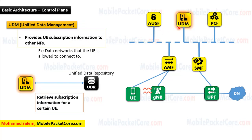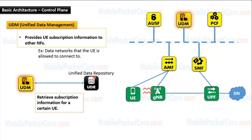Next, let's learn the UDM. UDM refers to Unified Data Management. It provides UE subscription information to other network functions when needed. UE subscription information includes, for example, the data networks that the UE is allowed to connect to. The UDM does not have a database to store the subscription information of the UEs. So there is another node named the UDR — Unified Data Repository — which is the database that stores the subscription information of all UEs in the network. The UDM connects to the UDR in order to retrieve subscription information of the UEs, and then delivers this information to other network functions when needed.